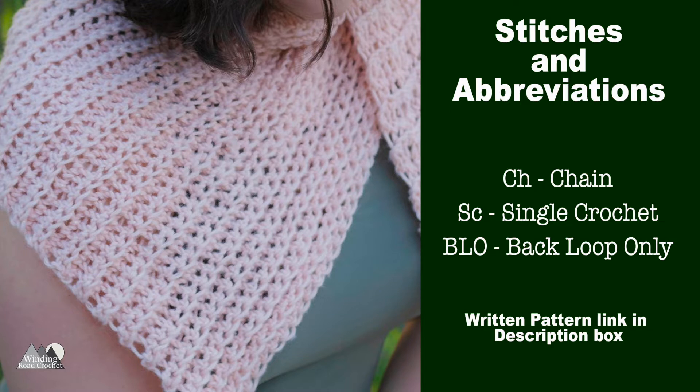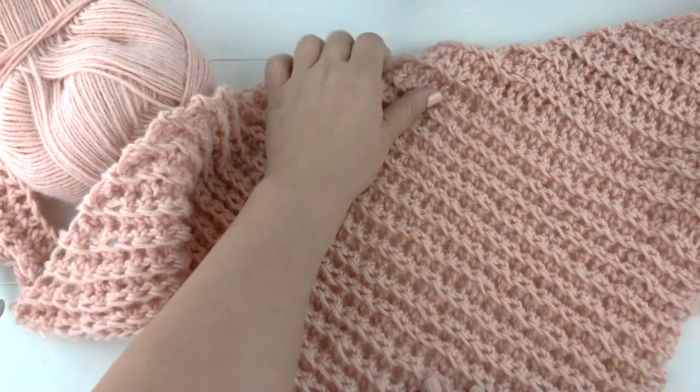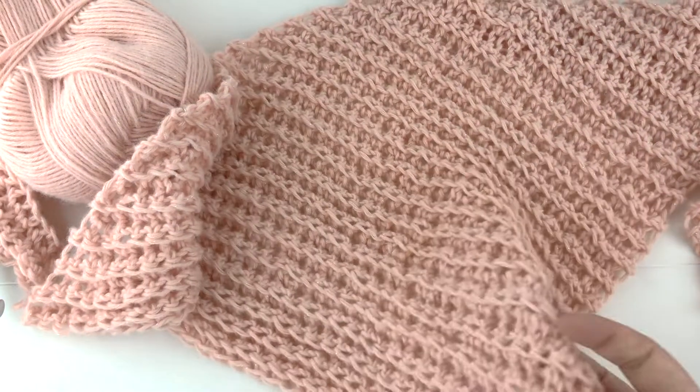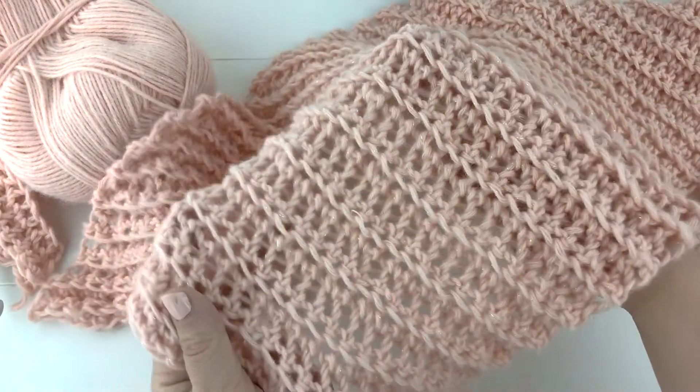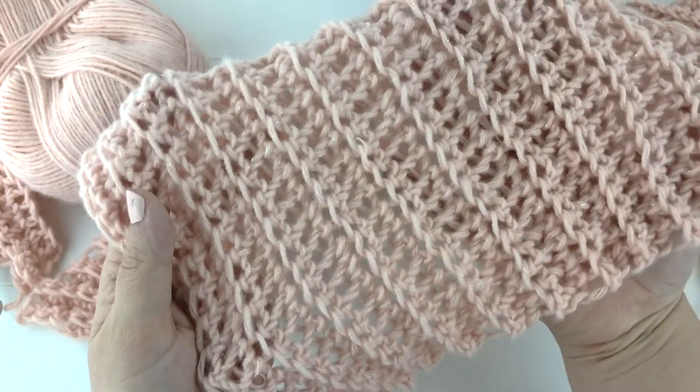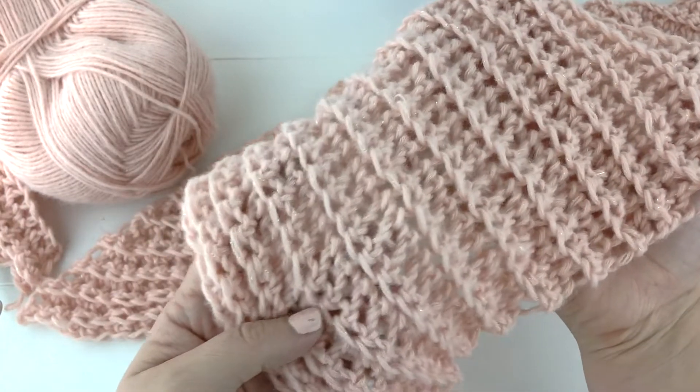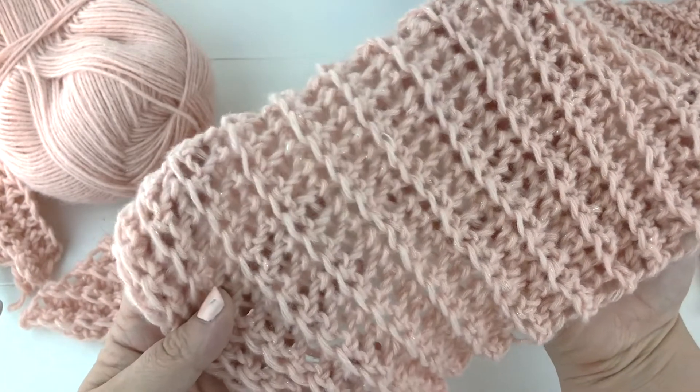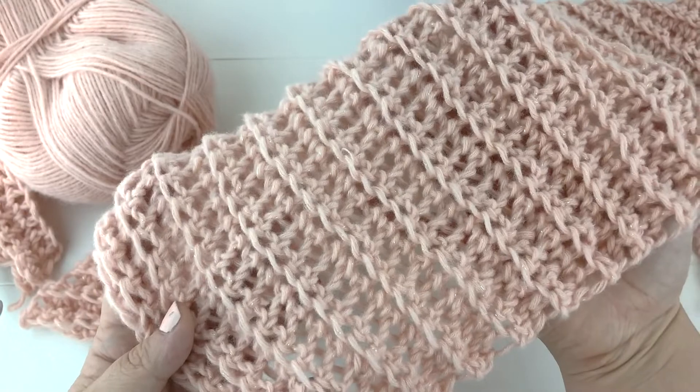The Rosabelle Shawlette is an asymmetrical triangle shawl that is worked in the back loops only to create this beautiful ribbing texture. It was inspired by a knitted triangle shawl that was the garter stitch, and so I tried to replicate it in crochet.